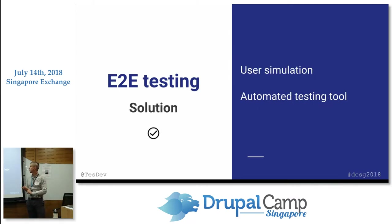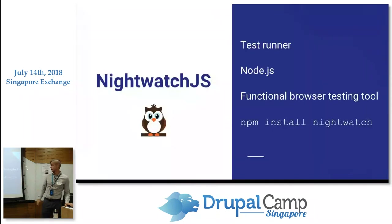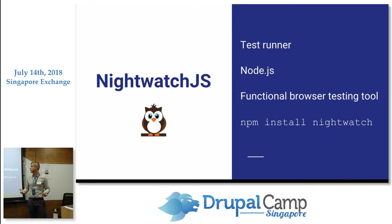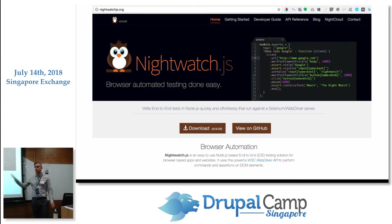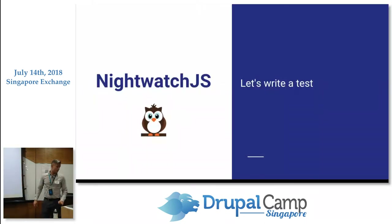To simulate the user we use some sort of a tool. In end-to-end implementation you'll find two definitions: a test runner and a browser automation tool. That's where Nightwatch.js kicks in — it is actually our test runner, a tool that controls the test. It's written in JavaScript and it's just basically an NPM dependency, so you just type 'npm install nightwatch' and you have Nightwatch on your machine. It's open source on GitHub with quite a nice API reference and developer's guide.